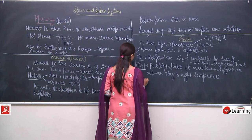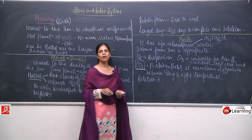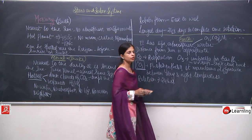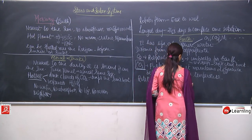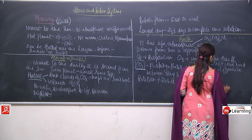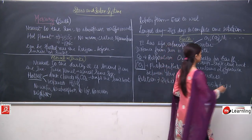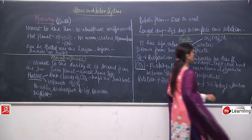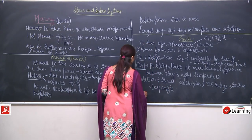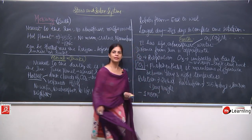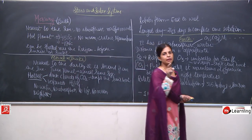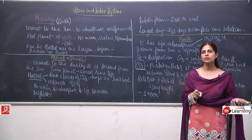Rotation and revolution — Earth's rotation takes 24 hours. Revolution takes 365 and a quarter days. Due to revolution, change in seasons happens; due to rotation, day and night occur. Earth has got one moon, meaning one natural satellite is present which rotates and revolves around the Earth — it does not rotate around the sun, so it is a satellite, not a planet.